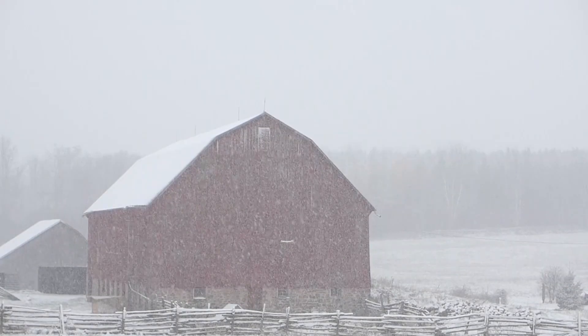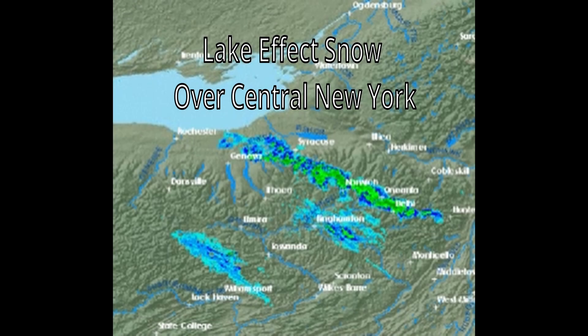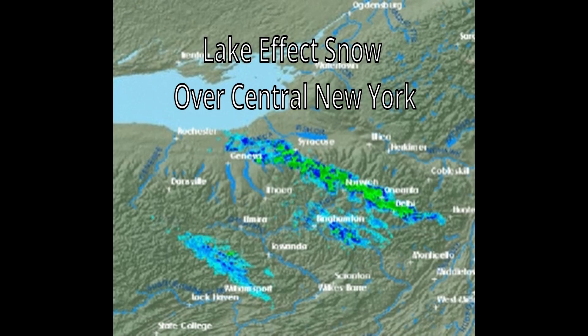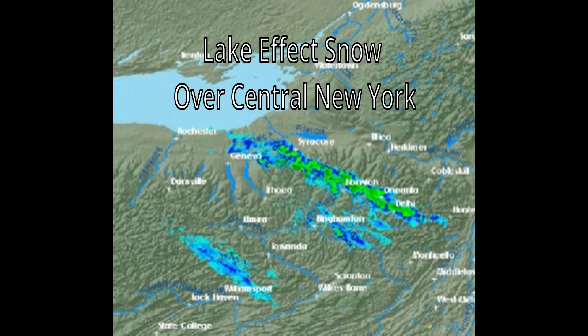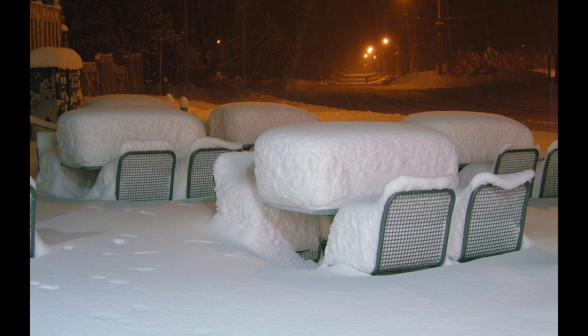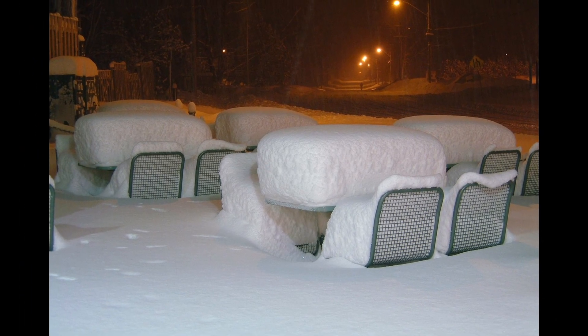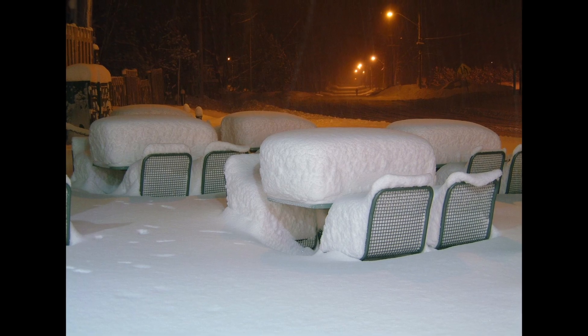This effect can be amplified if the wind direction and temperatures are just right. For instance, the warmer the temperature of the lake and the colder the air, the more moisture the air will absorb. If the wind is blowing over more of the lake, that can also result in the air taking in even more moisture. As one could imagine, these setups can lead to a lot of snow falling in a very short period of time.